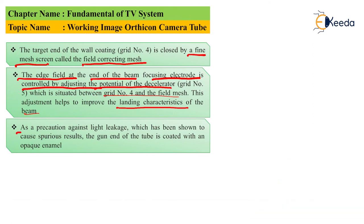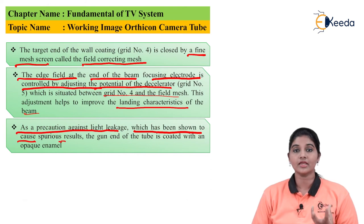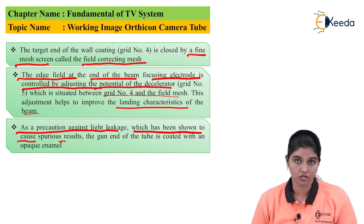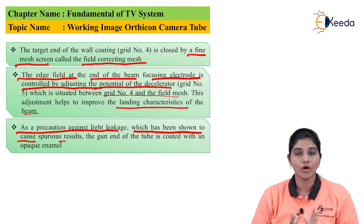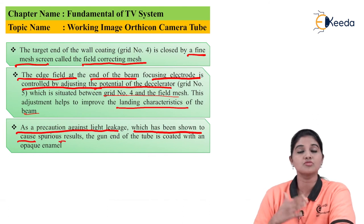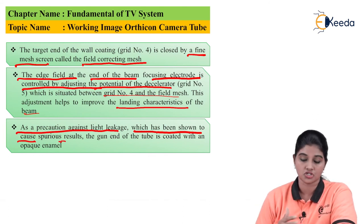As a precaution against light leakage, the gun of the tube is coated with opaque enamel. Light leakage may occur in the construction of the image orthicon tube, so the gun end is required to be coated with opaque enamel to avoid this.